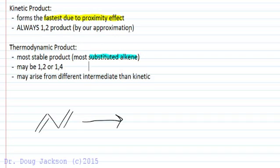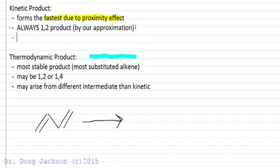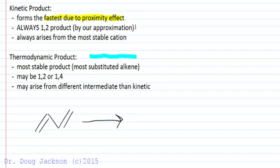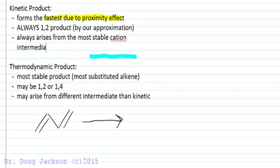We should also say that the kinetic product always arises from the most stable cation or most stable intermediate, and we'll see what we mean by that in just a moment. The thermodynamic product arises from 1,2 or 1,4 addition, and it may arise from a different intermediate than the kinetic product does.